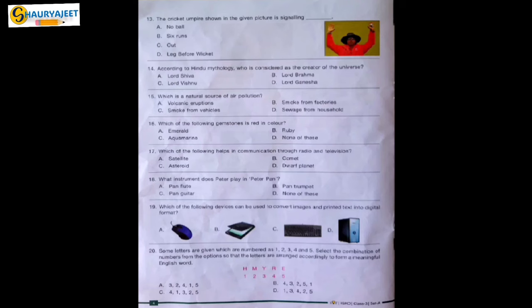Question 17: Which of the following helps in communication through radio and television? Options are satellite, comet, asteroid, dwarf planet. Option A, satellite, is correct. Satellites help us with broadcasting.